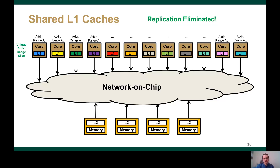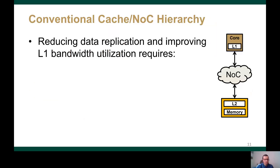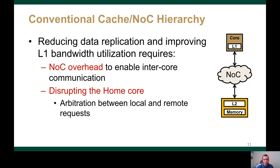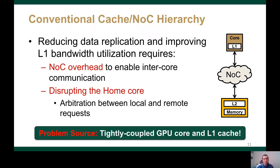However, shared L1 caches require inter-core communication. To illustrate that, let us consider this requester core. If the requester core asks for the green cache line that doesn't belong to its assigned address range, then it will inject a remote request into the interconnect to the home of the green cache line to fetch it, and then the home core will reply with the green cache line. So the shared L1 cache design can address both the low L1 bandwidth utilization and the data replication inefficiencies. However, because of the inter-core communication, it adds network overhead, and arbitration between local and remote requests is required. Our analysis shows that the main reason for these overheads is the tight coupling between the cores and the L1 caches.